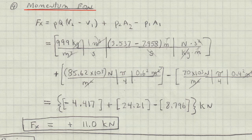Do algebra on the energy equation, then calculate that the pressure at 2 is 85.6 kPa gauge. Lastly, apply the momentum equation to calculate the force, and this is 11 kN.